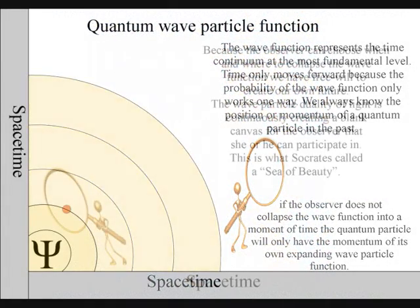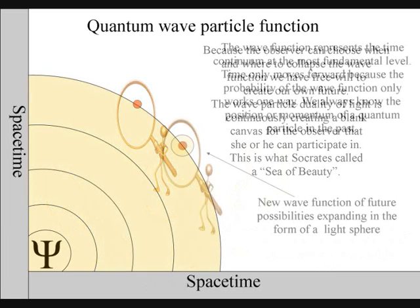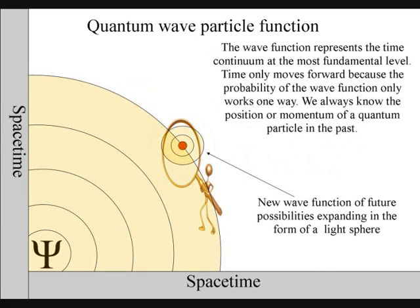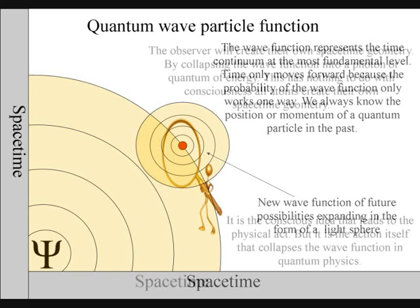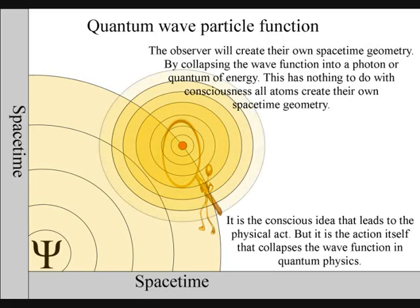It is because the observer can choose when and where to collapse the wave function that we have free will. Life will create its own ripples in the fabric of spacetime, forming its own broken symmetry of its own evolutionary path or timeline.